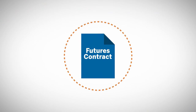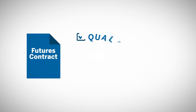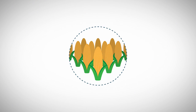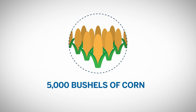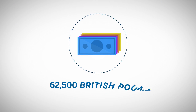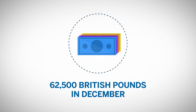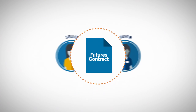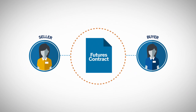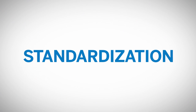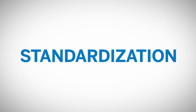An exchange-traded futures contract specifies the quality, quantity, and physical delivery time and location for the given product. This product can be an agricultural commodity, such as 5,000 bushels of corn to be delivered in the month of March, or it can be a financial asset, such as the U.S. dollar value of 62,500 British pounds in the month of December. The specifications of the contract are identical for all participants, and this characteristic allows a buyer or seller to easily transfer contract ownership to another party. Given the standardization of the contract specifications, the only contract variable is price.